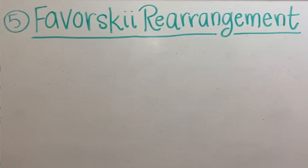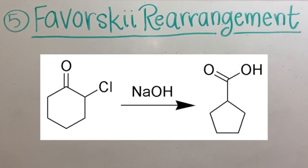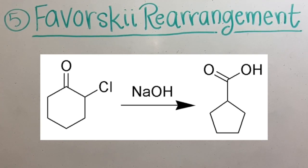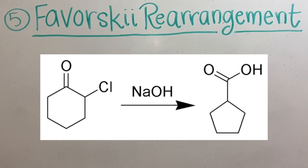The last transformation is a Favorski rearrangement. This reaction rearranges cyclopropanone and an alpha-halo ketone to a carboxylic acid derivative in the presence of a base. This is a simplified version of the rearrangement.